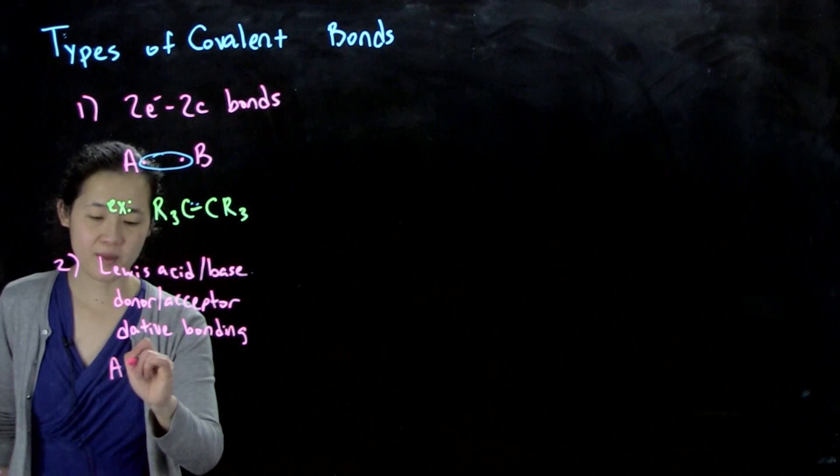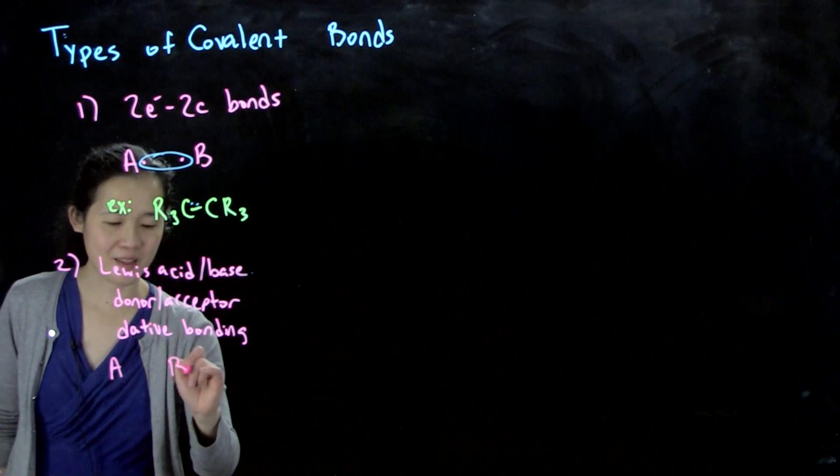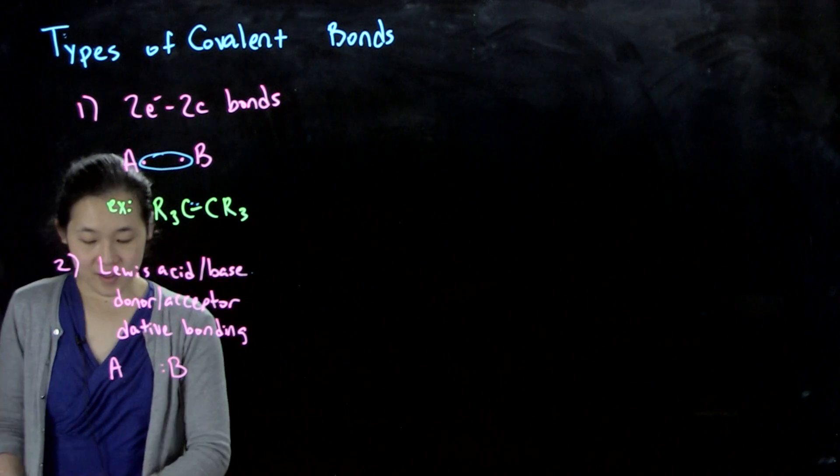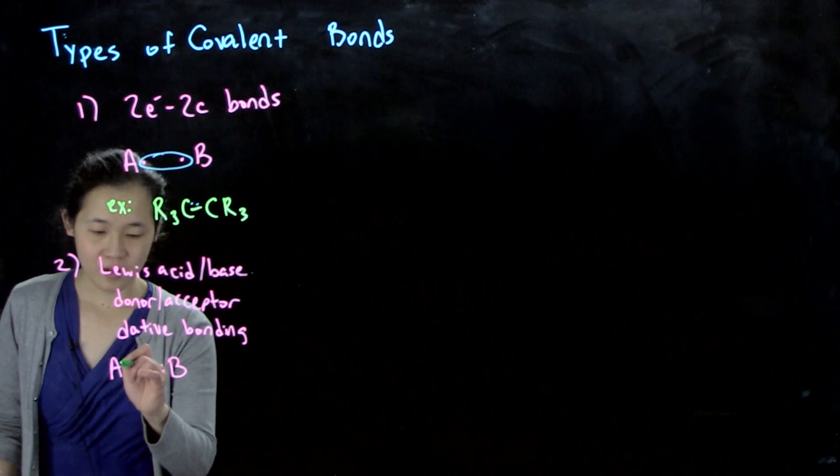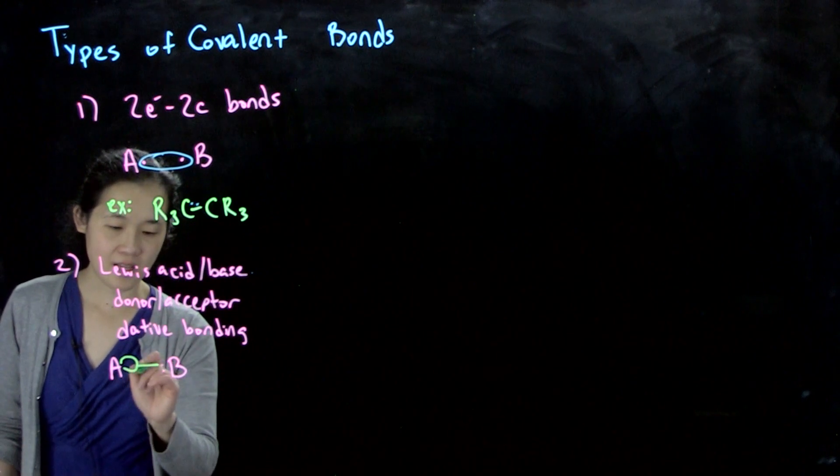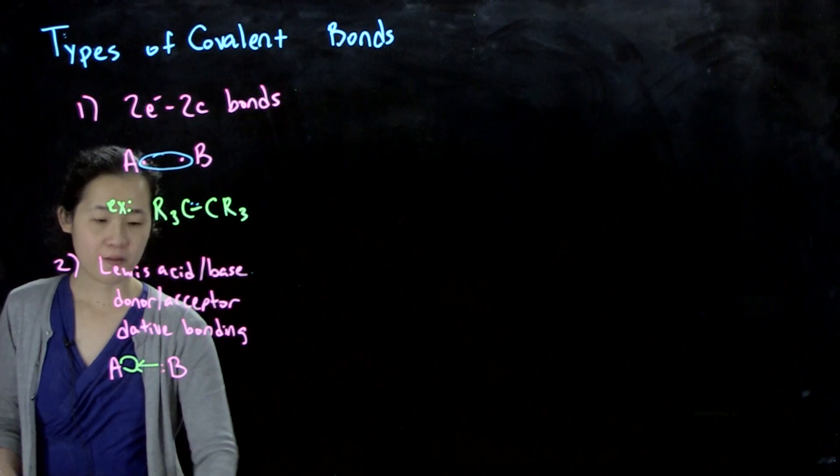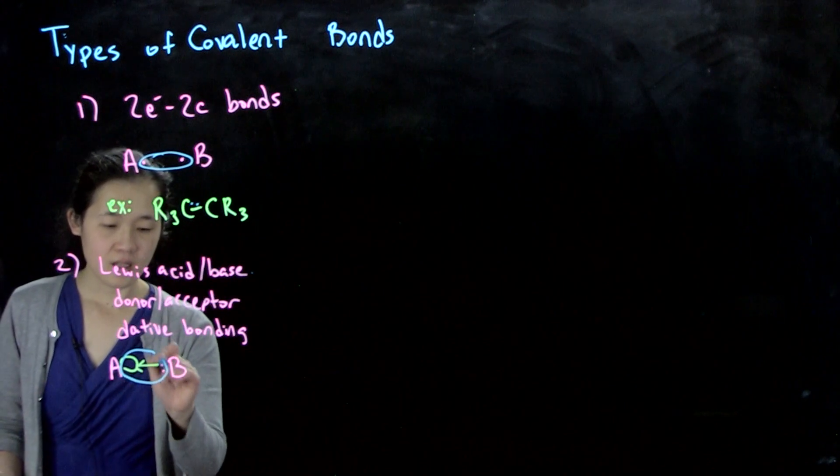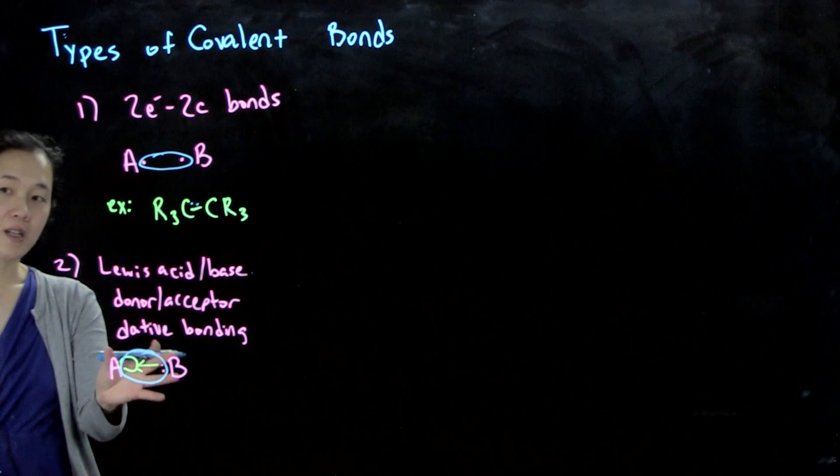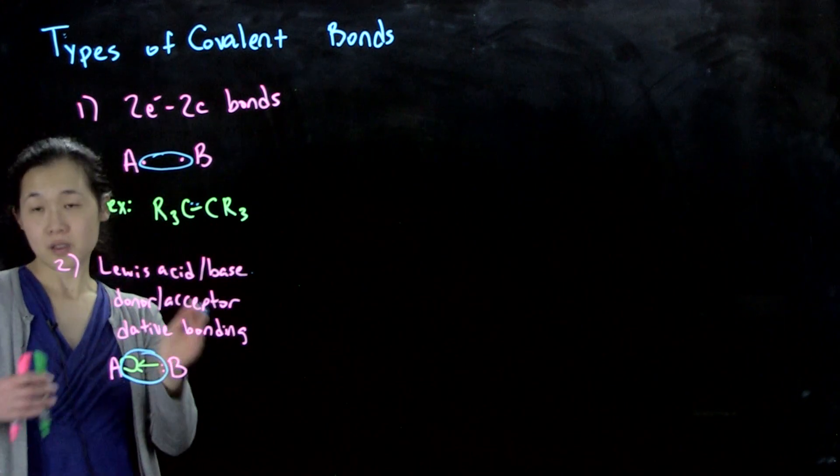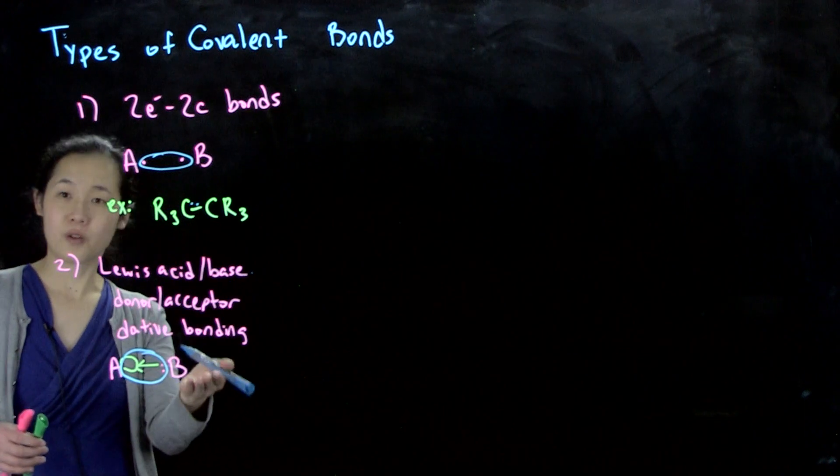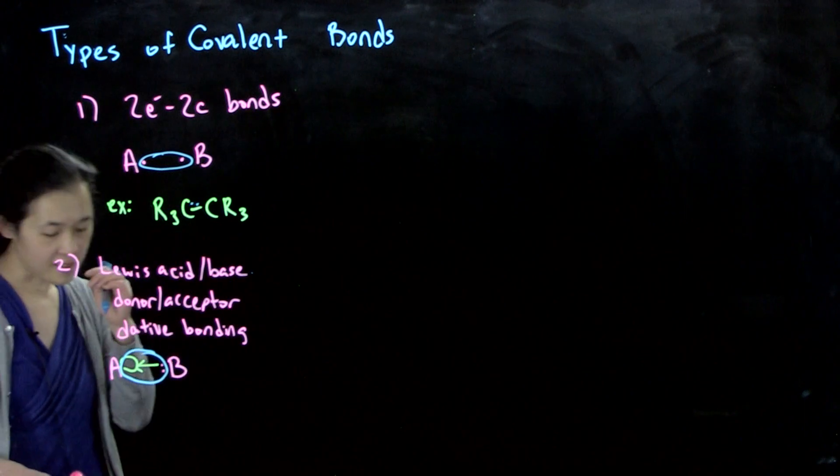This is when one atom actually gives a lone pair. The Lewis base goes into an empty orbital of the Lewis acid. Even though the final result is that we still have two centers and two electrons, the initial formation is from our Lewis base-Lewis acid interaction, which you've seen before.